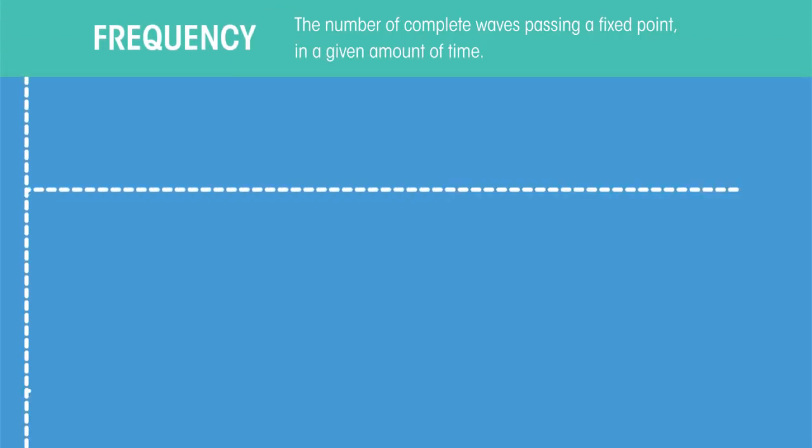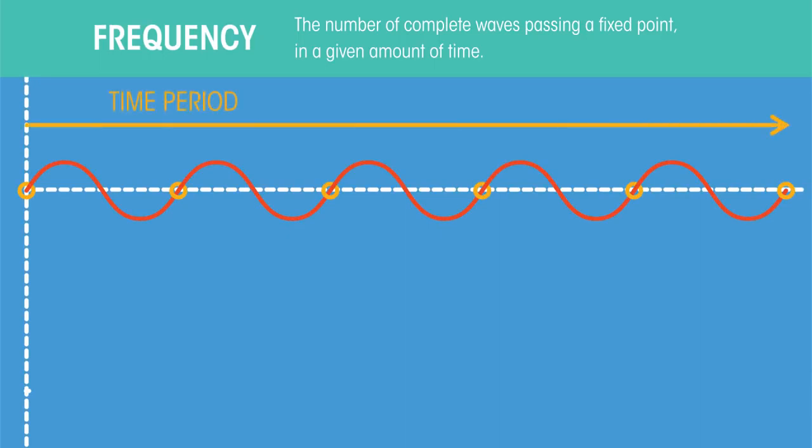The frequency of a wave is the number of complete waves passing a fixed point in a given amount of time. This time period is usually one second. This is what one complete wave looks like.